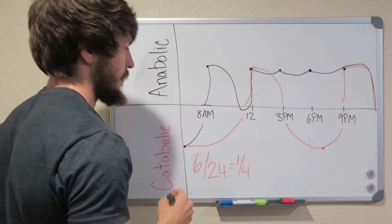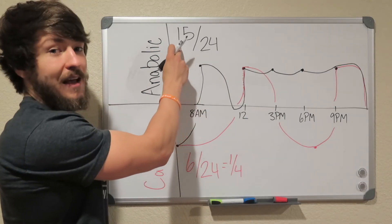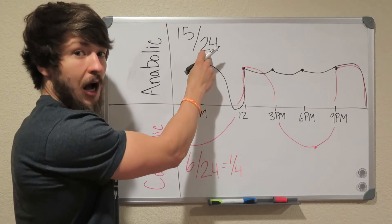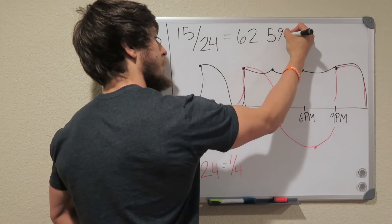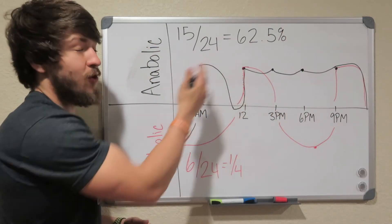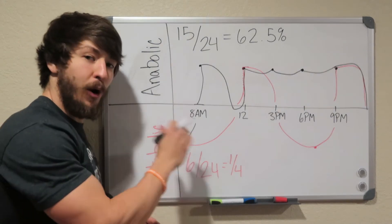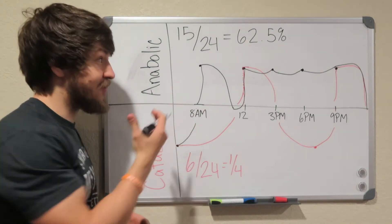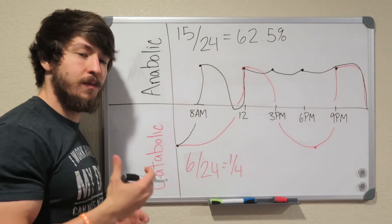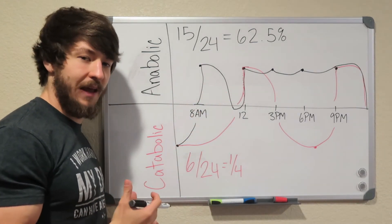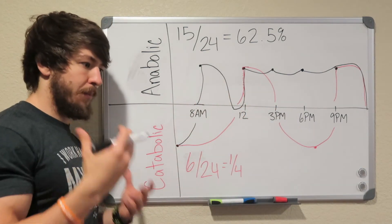So let's look at the math on these numbers. You can already see that now you're going to be in the anabolic phase 15 out of 24 hours versus 6 out of 24. Let's break that down into percentages. That's going to be 62.5% of your day you are spending burning fat. Think about how much your body would change. That's crazy.